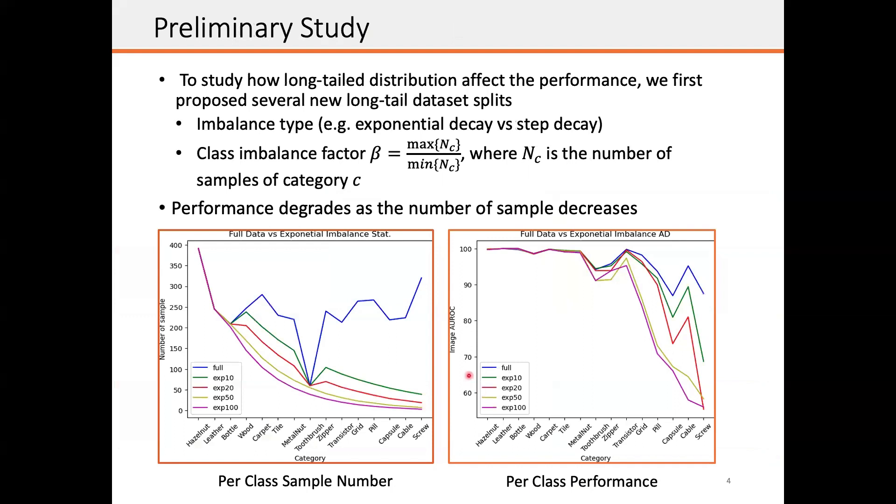Since the long-tail setting has never been studied in the anomaly detection literature, we first propose several new long-tail dataset splits. Each split is controlled by the imbalance type and also the class imbalance factor beta, which is the ratio between the maximum number of class samples divided by the minimum number of class samples. The sample distribution of the splits is shown on the left. On the right, we show that the performance of the state-of-the-art model degrades as the number of samples decreases.